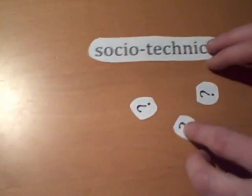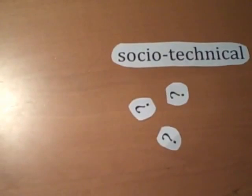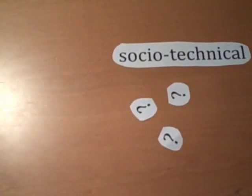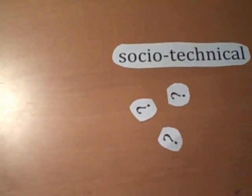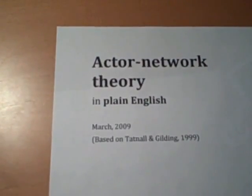Although the actor network theory is being criticized for various reasons, the main point of this theory is that it explores the ways in which the networks of relations are composed, how they emerge and come into being, how they are constructed and maintained, how they compete with other networks, and how they are made more durable over time. I am Lukey, and this was actor network theory in plain English.